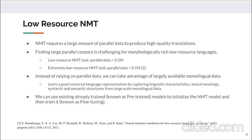Instead of relying on parallel data, we can take advantage of monolingual data which is largely available. Using this large-scale monolingual data, we can learn good universal language representations by capturing linguistic characteristics, lexical meanings, and syntactic and semantic structures. We can then use this pre-trained model to initialize NMT rather than training from scratch using large-scale parallel data.